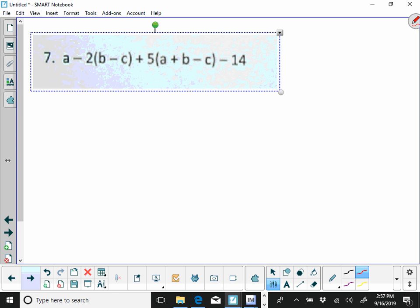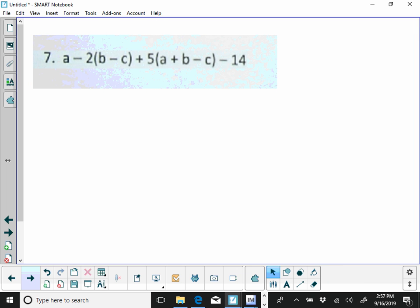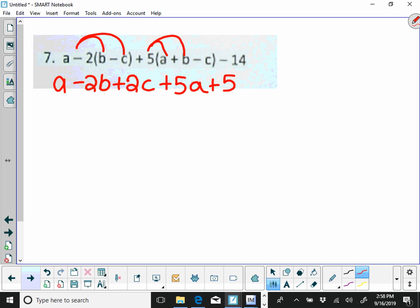I jumped to problem number 7. And again, I'm going to start by distributing. So I'm going to distribute a negative 2 here, so that's negative 2b plus 2c. Distribute a 5 here, so that's 5a plus 5b minus 5c, and then the minus 14.